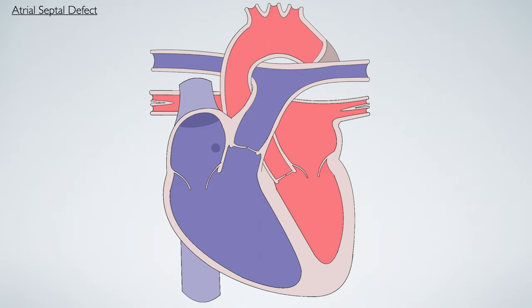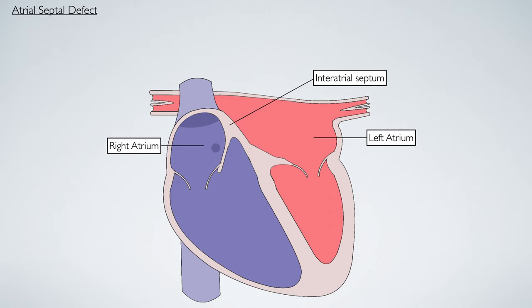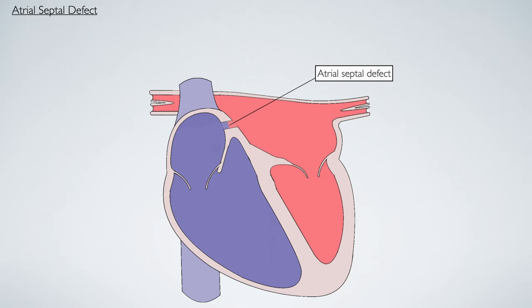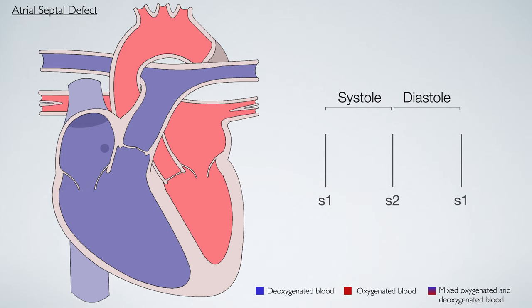Let's take a moment to look at the atrial septal defect and how the murmur occurs. Here is our diagram of the heart. Let's remove the pulmonary artery and the aorta so we can get a closer look. The left atrium and the right atrium are separated by a thin tissue called the interatrial septum, and it is here where the atrial septal defects occur. Atrial septal defects effectively allow for an abnormal communication between the left and the right atria.